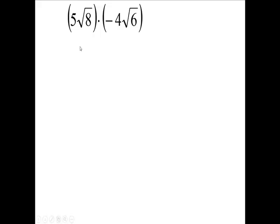So now let's think about this for a minute. We're going to have 5 times minus 4 is a minus 20. The two radicals are written as one, with an 8 times 6, which is what? 8 times 6 is 48.